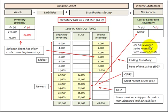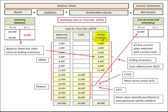The income statement has the current sales matched with current costs. What remains in our ending inventory would be our oldest inventory, with those oldest prices. That's what would be included in our inventory account on our balance sheet. So the balance sheet would have these older costs for our ending inventory, whereas the income statement used our most recent costs or current costs.